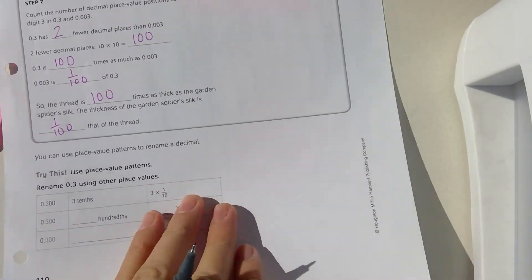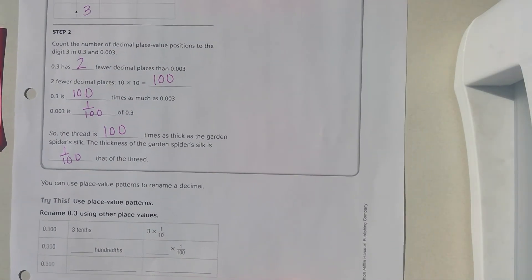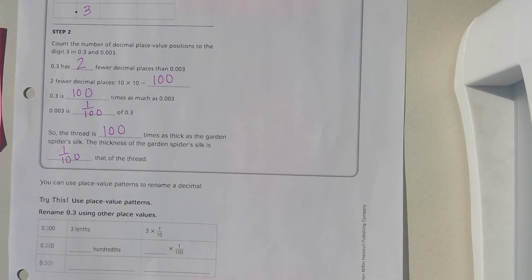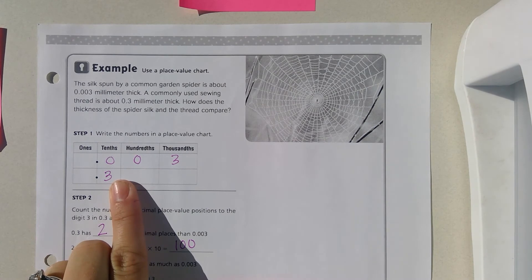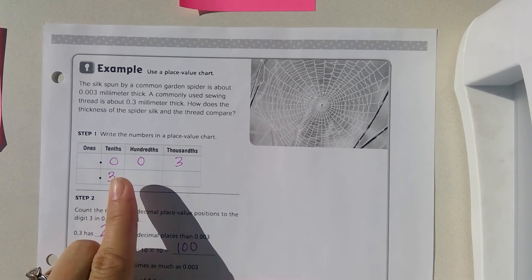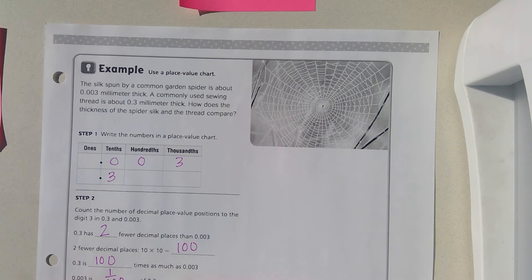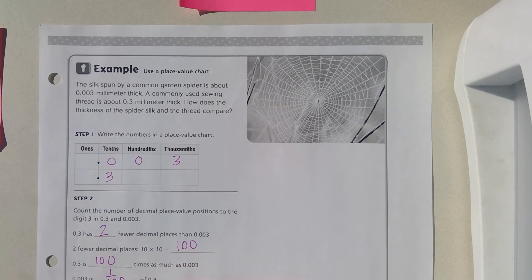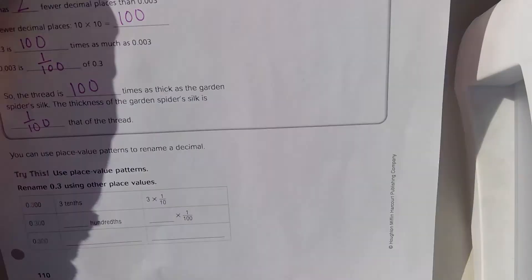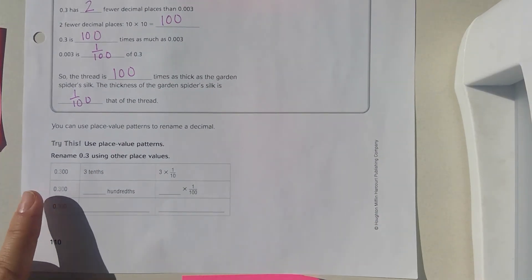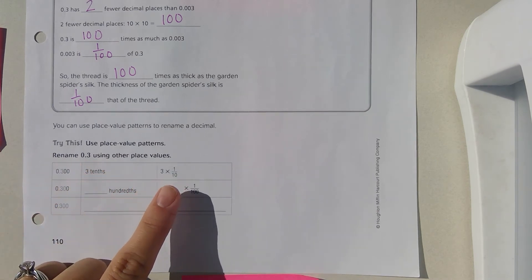You can use place value patterns to rename a decimal. Let me say that this only works if your digit is the same in both place values. Up here they both had the digit three. If the two digits were different, this will not work. Multiplying by a whole number or by a fraction only works when your two digits are the same. Down here it says rename three tenths using other place values.